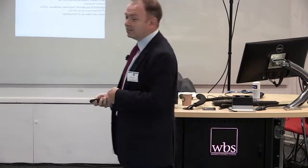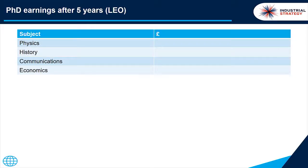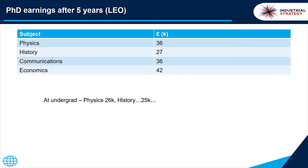The third area is around the Longitudinal Educational Outcomes database. One of the parents of that is Rachel Sandby-Thomas, the Registrar at the University of Oxford. It's been described as the Manhattan Project for higher education. What it does is link your academic record to your PAYE record, so you can see what people get for their degree — obviously they get lots of things other than money. DFE dropped this data last week: PhD earnings after five years.